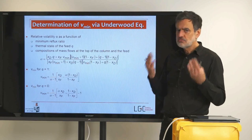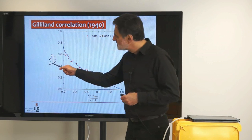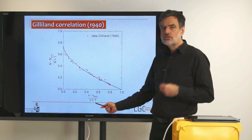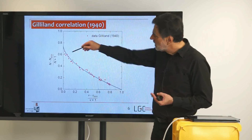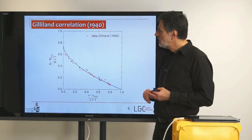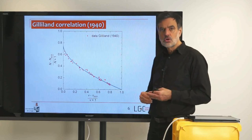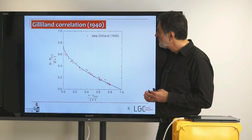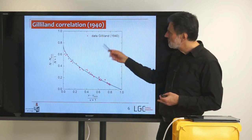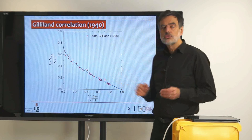Gilliland must have been a really ingenious person. He found that if instead of simply plotting n versus v, you plot (n − nmin)/(n+1) versus (v − vmin)/(v+1), essentially all McCabe-Thiele results he obtained fall on top of more or less one line. This was 1940, before electronic computers were available, so he did the McCabe-Thiele diagrams by hand. The red points shown here are read from his original 1940 publication — his original data — and he realized they lie more or less on a single line.